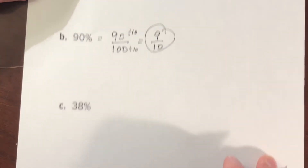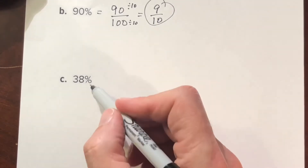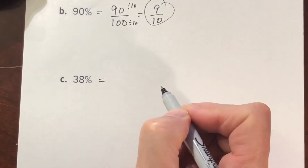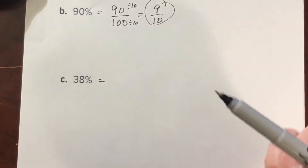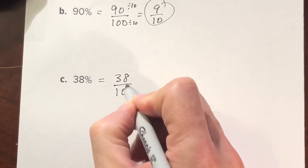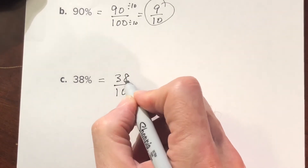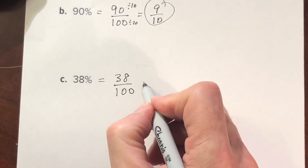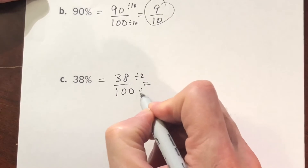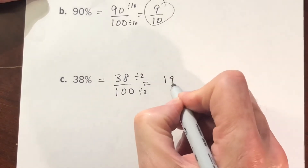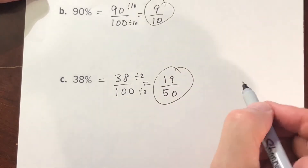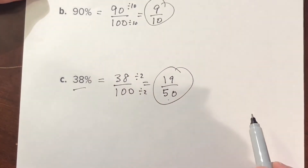For 38 percent: we take 38 out of 100 and simplify. We can divide each side by 2 because they're even numbers, and we end up with 19/50. So 38 percent equals 19/50.